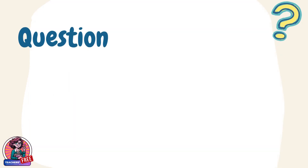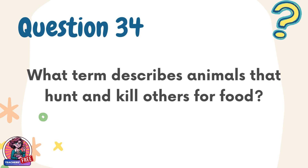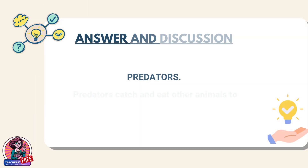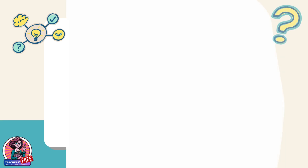Question 34. What term describes animals that hunt and kill others for food? Answer: Predators. Predators catch and eat other animals to survive and keep ecosystems balanced.